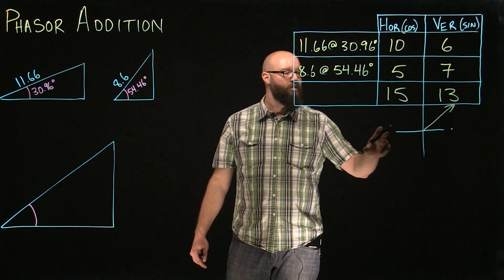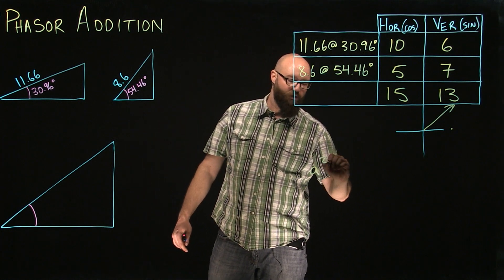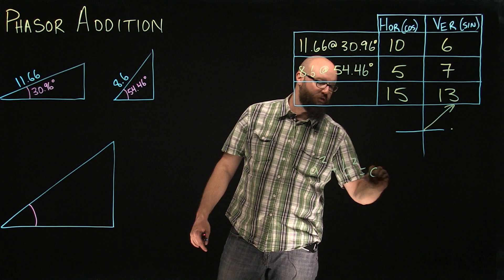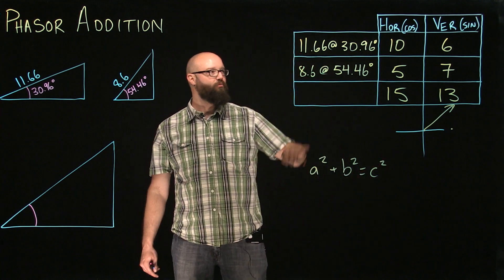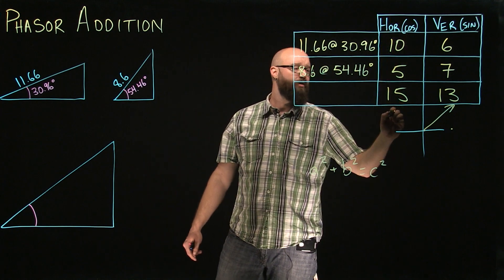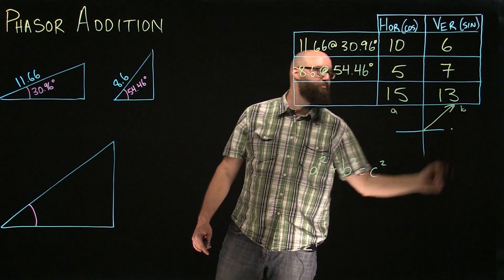Now, by using Pythagorean's theorem, we have our A squared plus B squared equals C squared. We substitute these values. This is our A. This is our B.